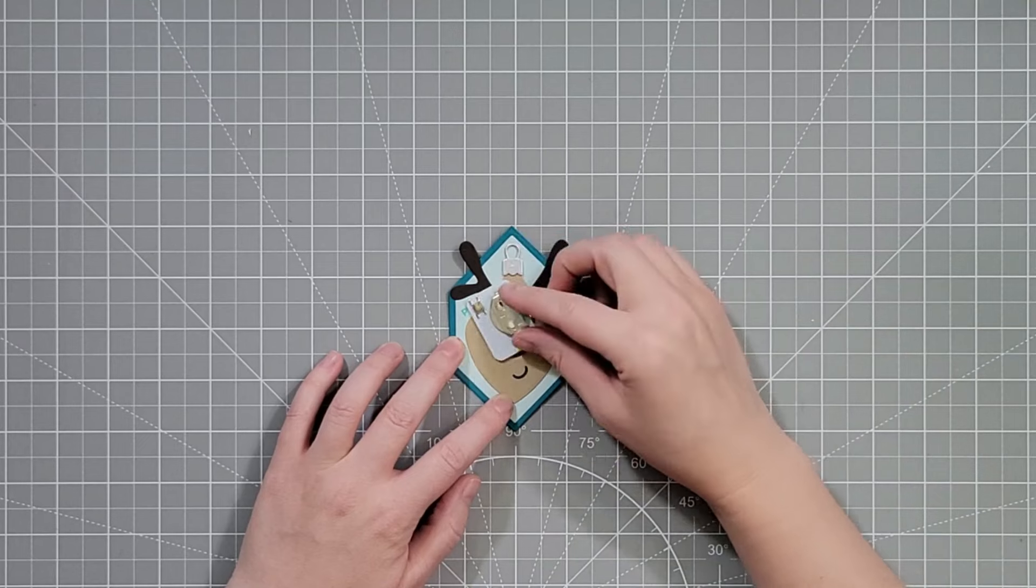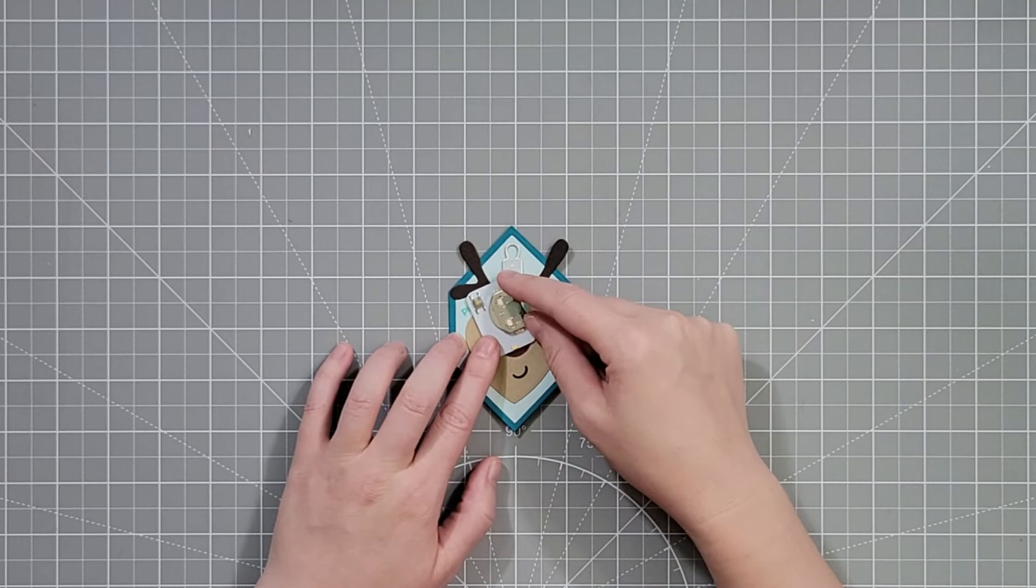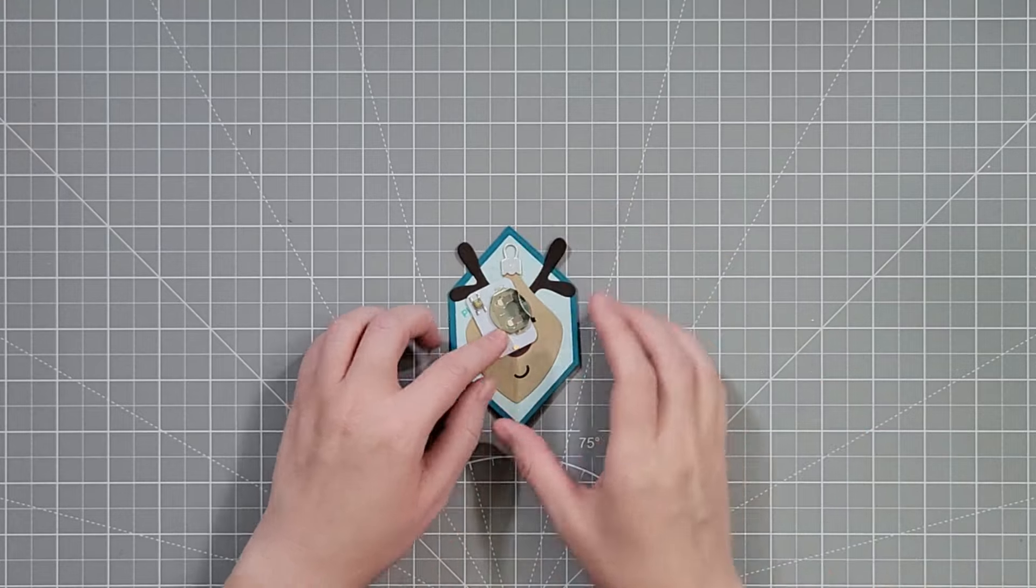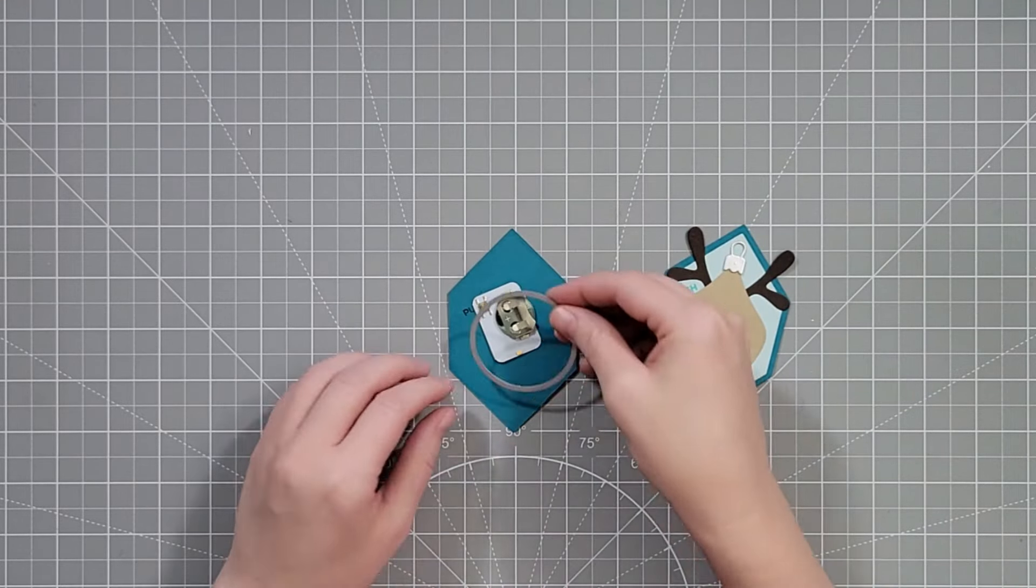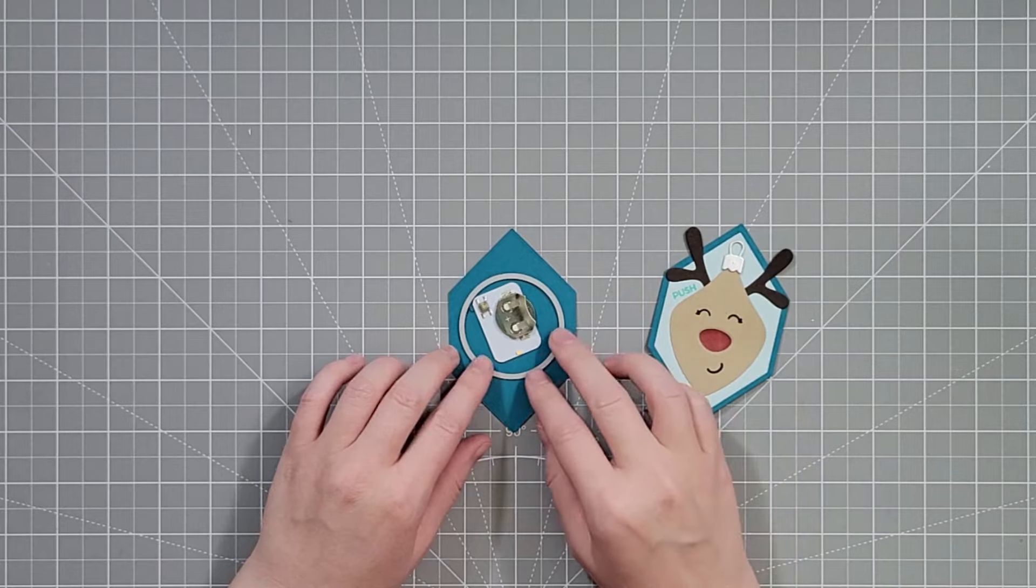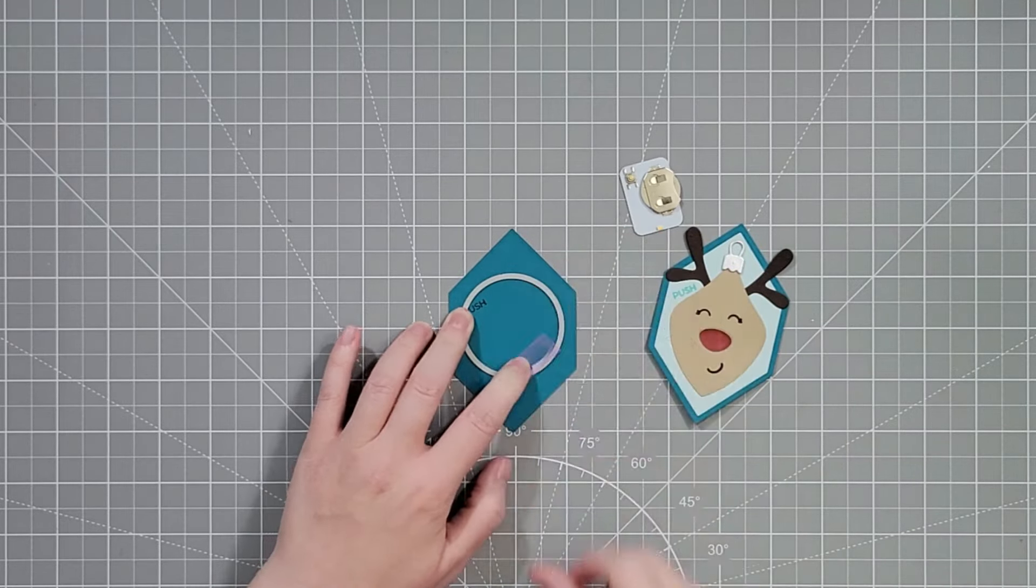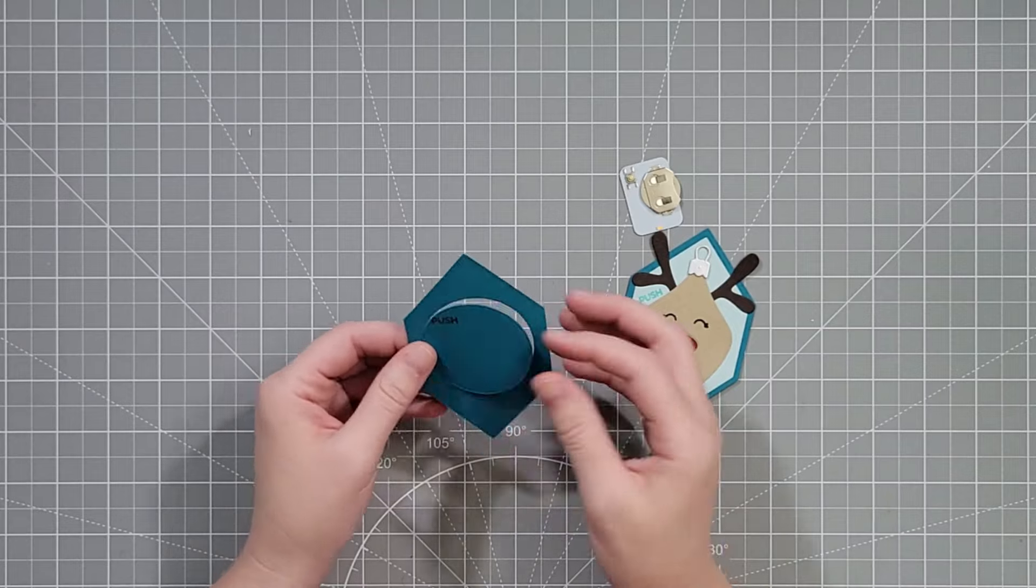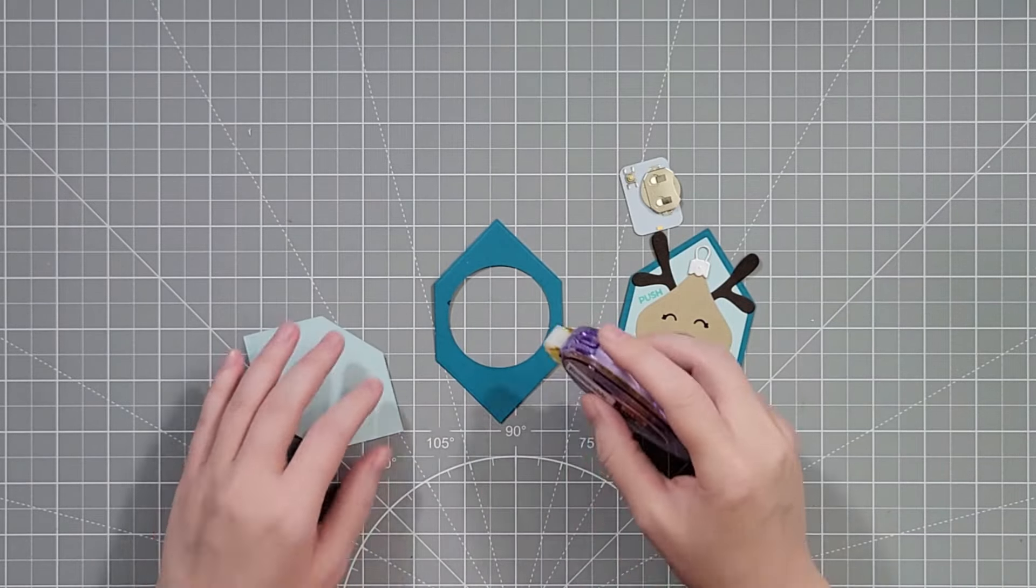We're actually going to tape the light down to the back of our tag. Because I want to be able to replace the battery if it wears out I'm lining up where I want the light to go on the reindeer version and then removing it and trying to lay it down in the same spot on the back of our tag. Then I will use the two inch circle die from Emergency Card Essentials number one to cut a hole in it.